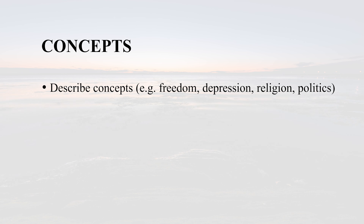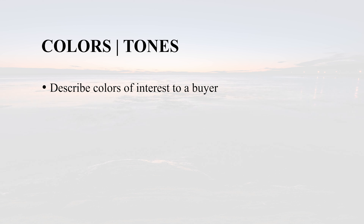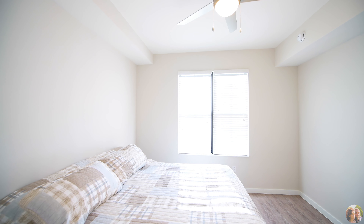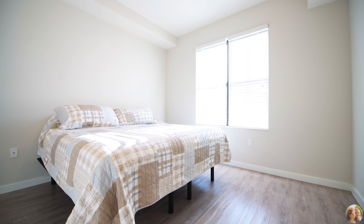Consider then concepts in your content. If your imagery is conceptual, add keywords that describe this concept — for instance, freedom, depression, disease, religion, or politics. Color tones could be important too. If your image has certain colors that dominate and will be of interest to a buyer, consider including them. For instance, if you have a photo of a bedroom interior with beige colors of walls and bedding, include neutral, beige, and color as part of your keywords.